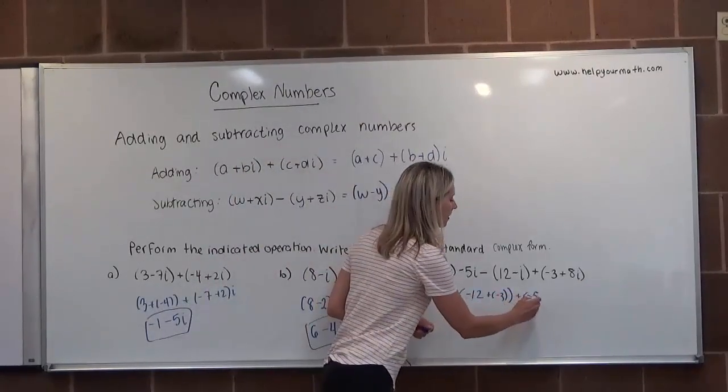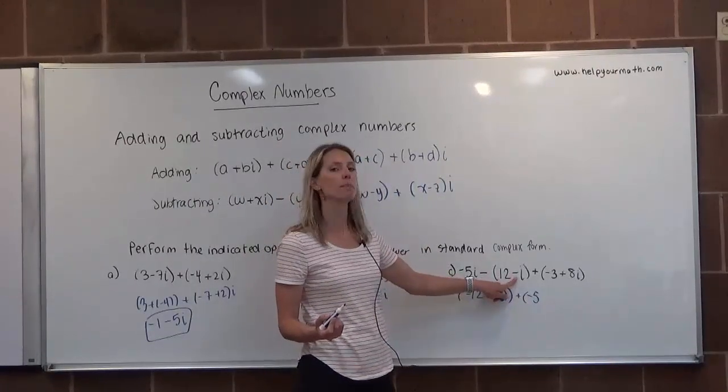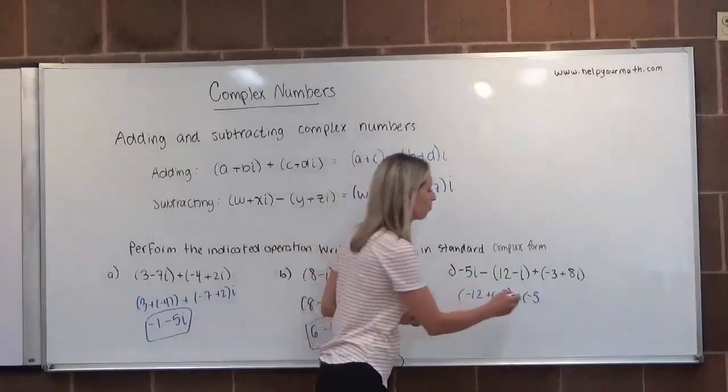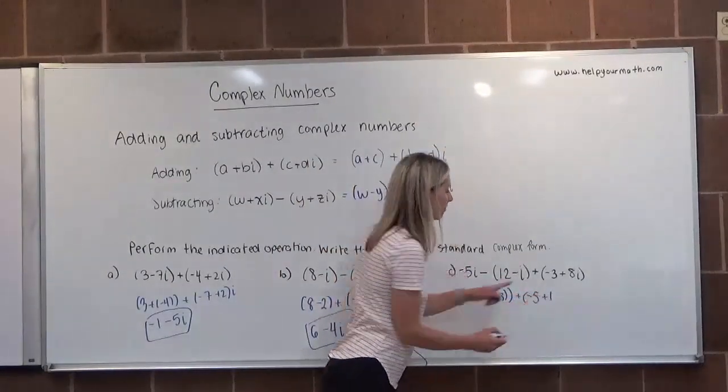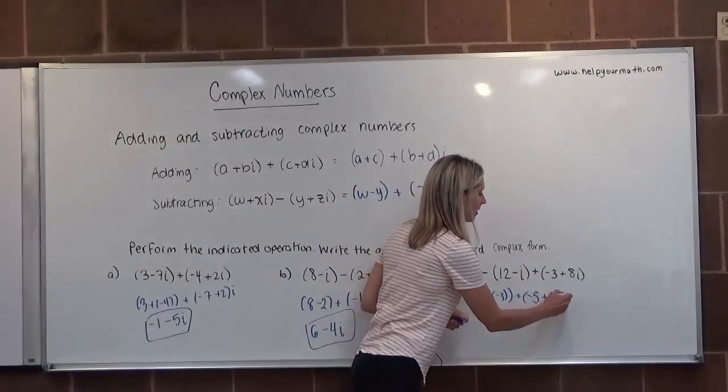So first I have negative 5. I want to be careful here. I'm distributing the subtraction, so this becomes a positive I. And the coefficient of positive I is 1, so plus 1. And then this is addition, so plus 8 times I.